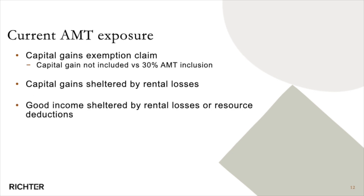Current AMT exposures apply whenever there's a mismatch between your federal regime tax and your AMT regime. Capital gains, most notably, whenever there's a lifetime capital gains exemption under the federal regime — there's no taxable income — whereas it's included at 30% under the AMT regime. Other exposures arise whenever there's a mix of capital gains sheltered by rental loss or resource deductions, which again receive two separate treatments under the AMT and regular federal tax regimes.